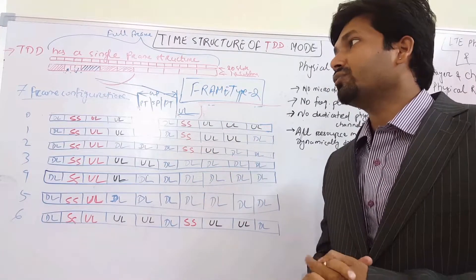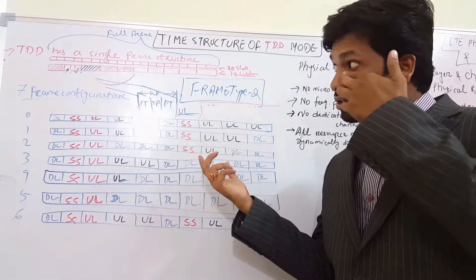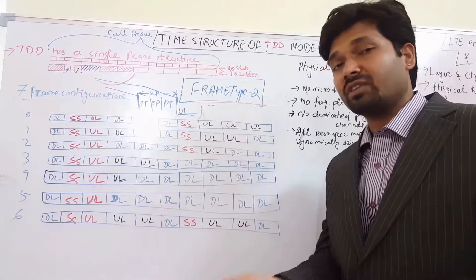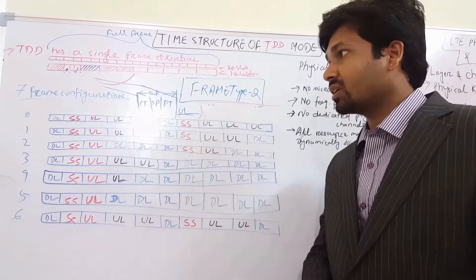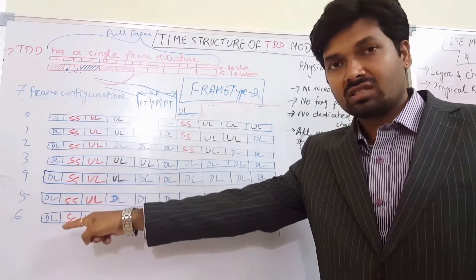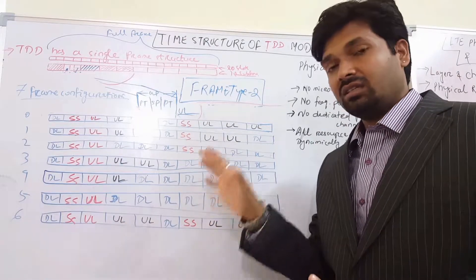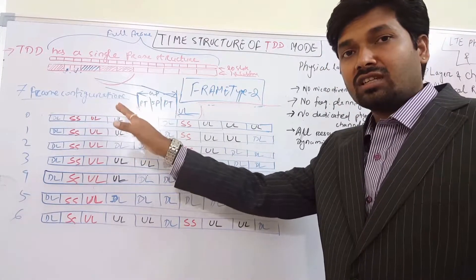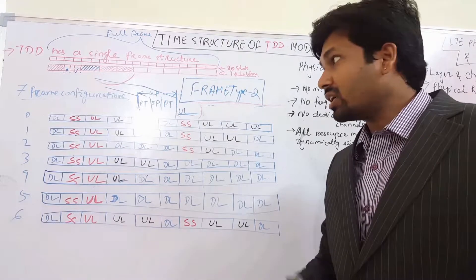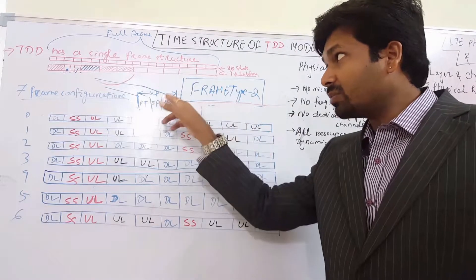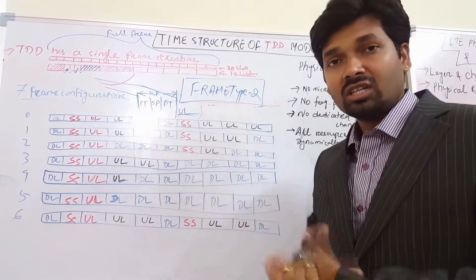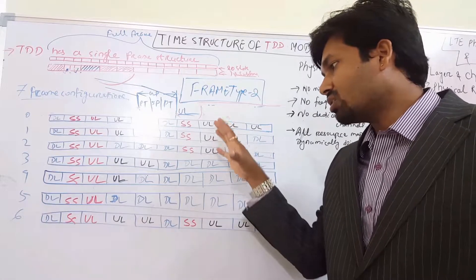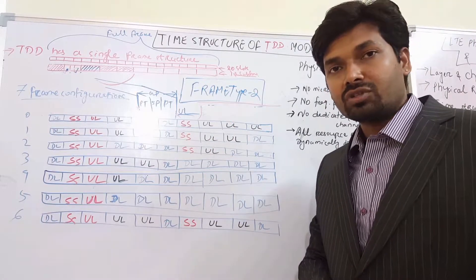Now we see the different configuration of TDD frames or subframes as per the 3GPP standards. We have 7 different frame configurations in TDD or frame type 2: configurations 0, 1, 2, 3, 4, 5, and 6. We already discussed what the special subframe is — it consists of a downlink pilot time slot, uplink pilot time slot, and guard period. The guard period consists of 2 propagation times and 1 switching period, as discussed in the previous session.